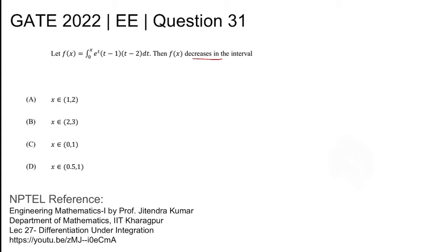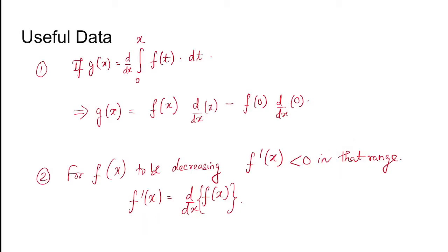Coming to the useful data: If g(x) is a function of x which is given by d/dx of integration 0 to x f(t) dt, then if you want to find out the differentiation, g(x) will be actually equal to this function where you put the limit in that function, f(x) multiplied by d/dx of the upper limit.